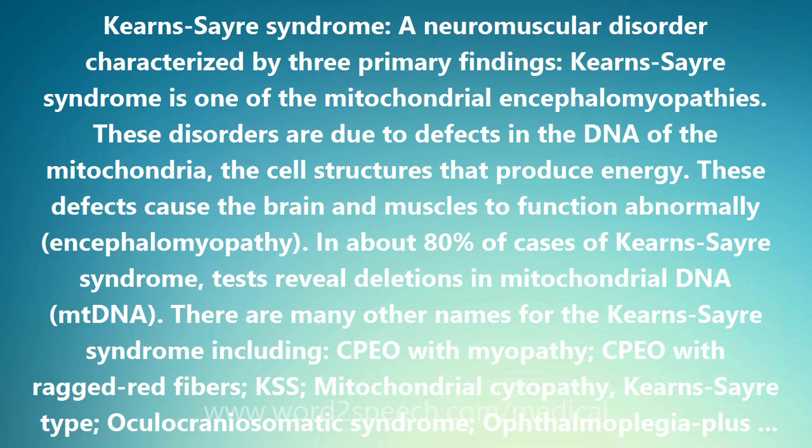These defects cause the brain and muscles to function abnormally — encephalomyopathy. In about 80% of cases of Kearns-Sayre Syndrome, tests reveal deletions in mitochondrial DNA (MT-DNA).